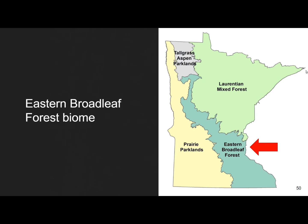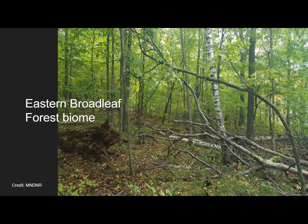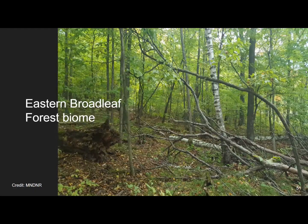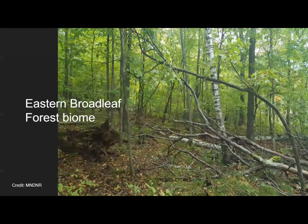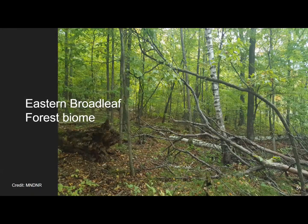The eastern broadleaf, or hardwoods, forest biome occurs in the central and southeastern portion of the state. This type of forest or biome is quite different. You don't have the heavy fuels that you had in the northeast portion of the state. Trees are generally smaller in diameter, they don't grow as tall, and these are hardwood trees instead of coniferous or needled trees. You'll also see that the understory — the bushes, the grasses, and other things nearer the ground — is much more open than it is in the northeast portion of the state.